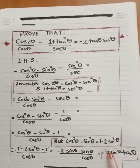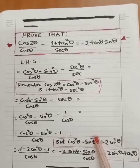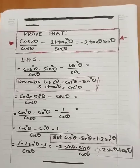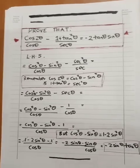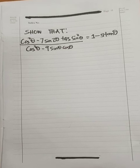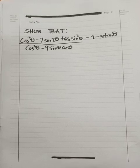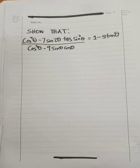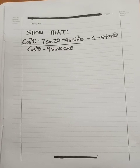So we have now actually proven that the left hand side is equal to the right hand side. If you haven't subscribed, please ensure you subscribe and share this video, and don't forget to give it a thumbs up. In the next video, I'm going to solve this equation: show that sin²θ minus 7sin(2θ) plus 45sin²θ divided by cos²θ minus 9sinθ multiplied by cosθ is equal to 1 minus 5tanθ.